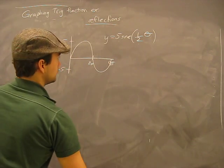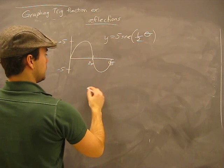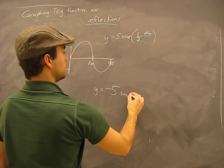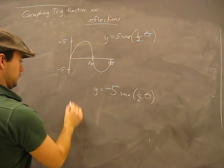If you were given, see if you can tell the difference here. If you're given y = -5sin(½θ), clearly you're creating...